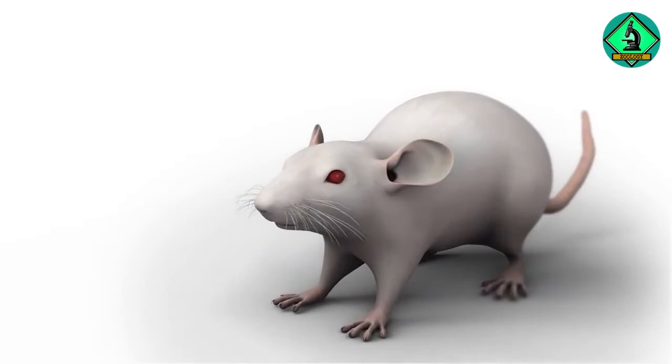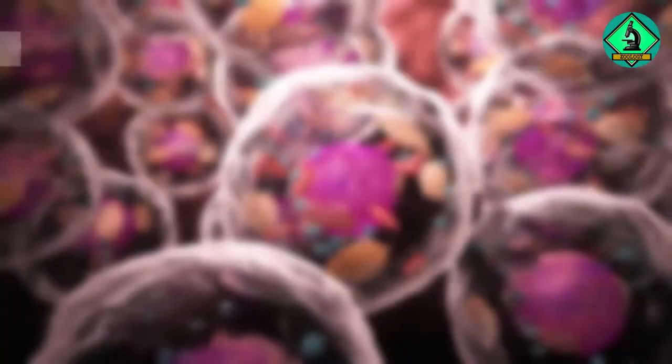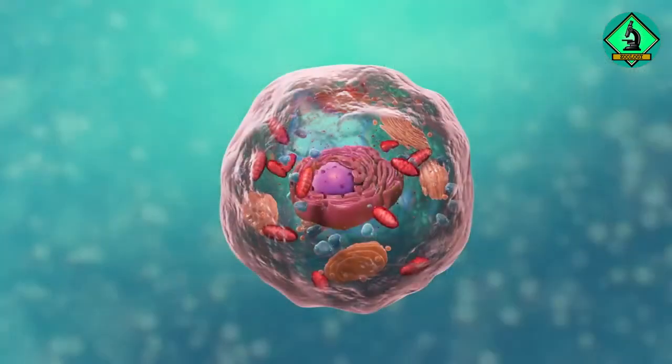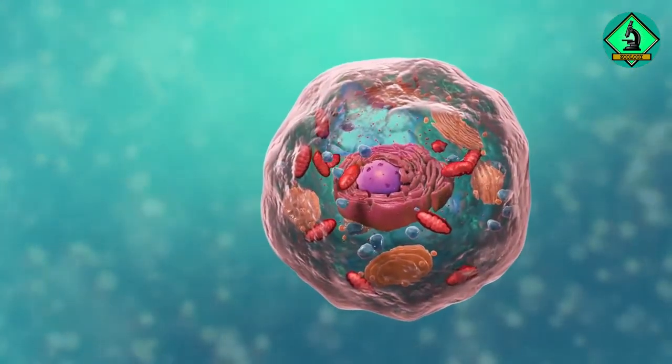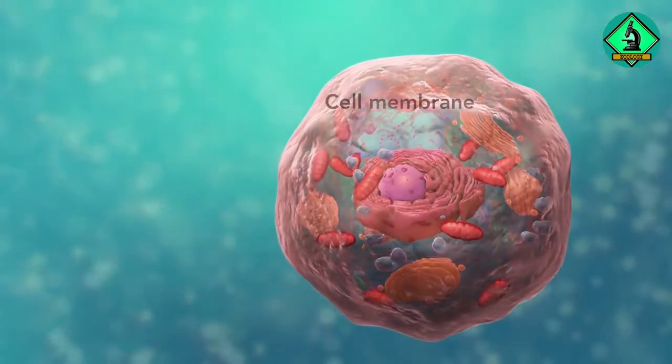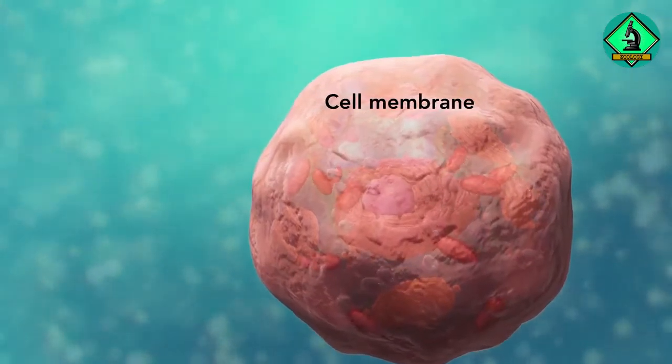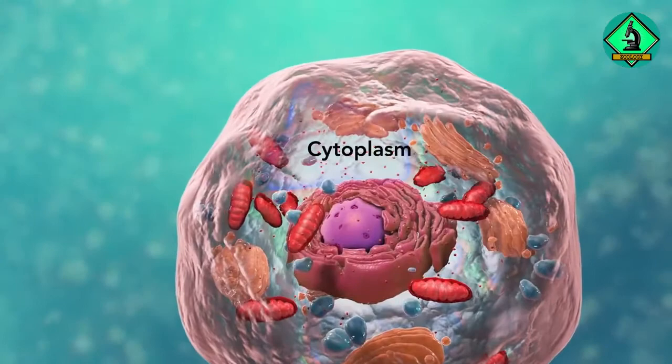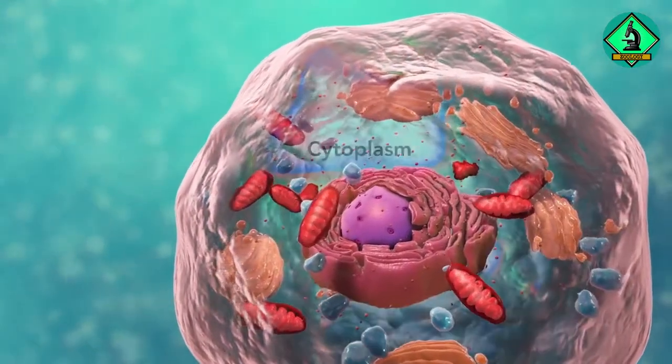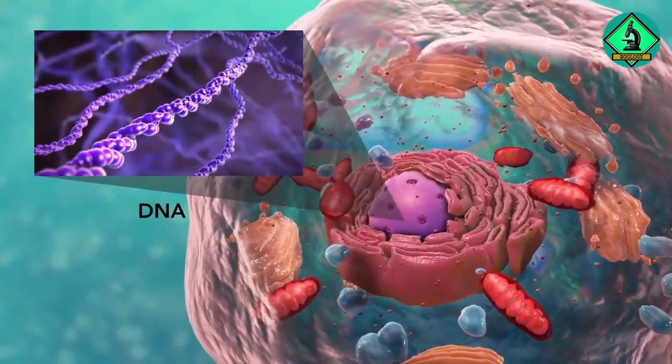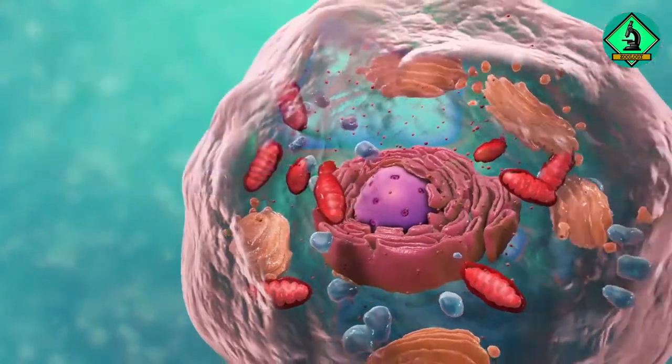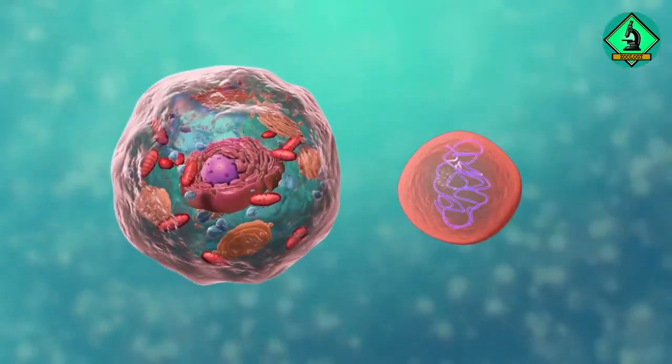Cells are the smallest living units of an organism. All cells have three things in common no matter what type of cell they are. All cells have a cell membrane which separates the inside of the cell from its environment, cytoplasm which is a jelly-like fluid, and DNA which is the cell's genetic material. There are two broad categories of cells.